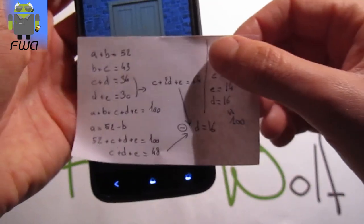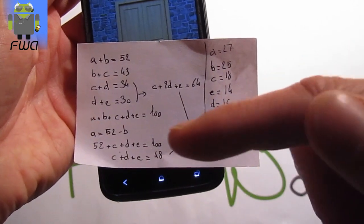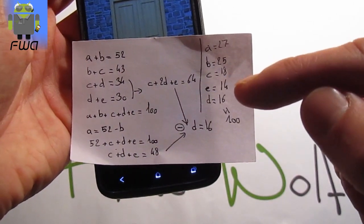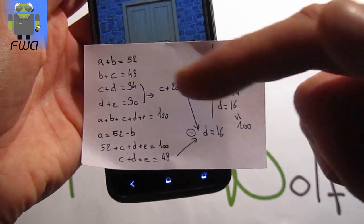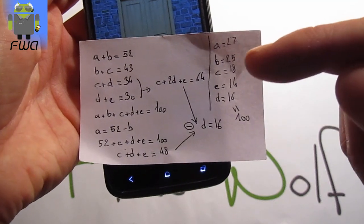G is the fourth, this one. Thanks to that we can now calculate g plus e equals 40. So e equals 14. We also get c plus g equals 44. So we get c equals 18.